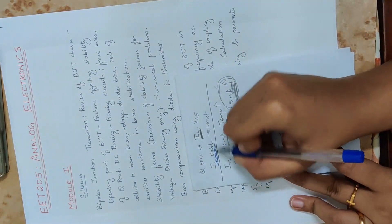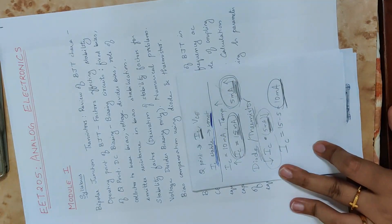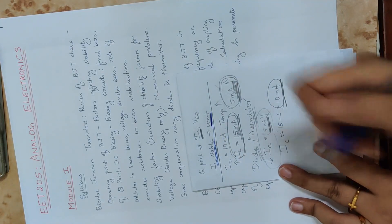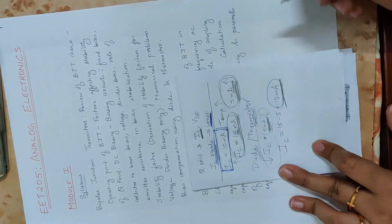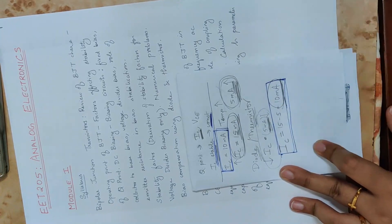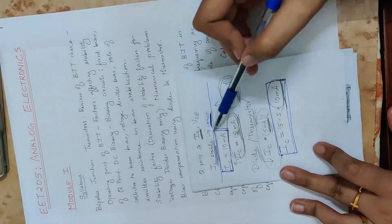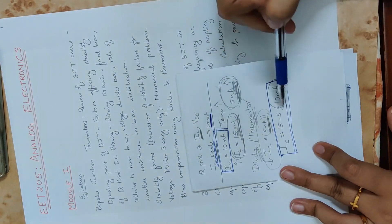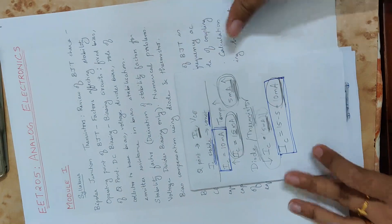The result is stability: IC is stable and constant at 10 mA. IC remains at 10 mA — IC is constant. This is the concept of stability through bias compensation.